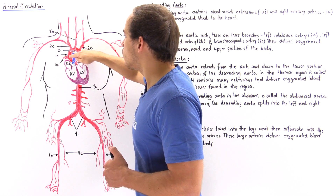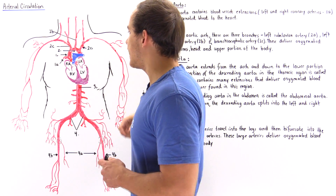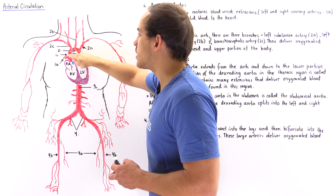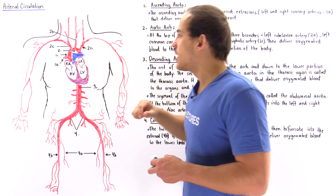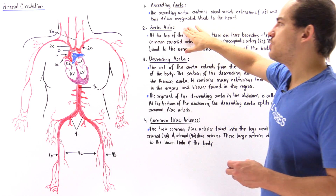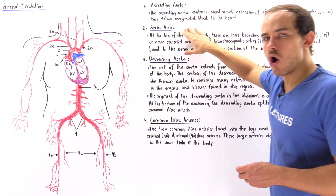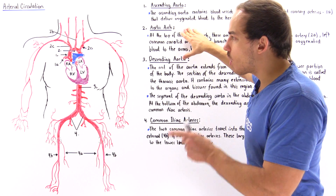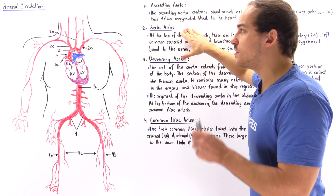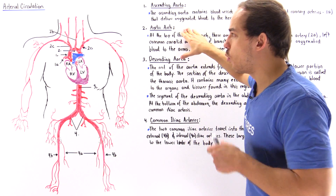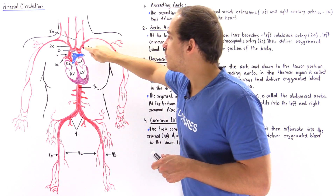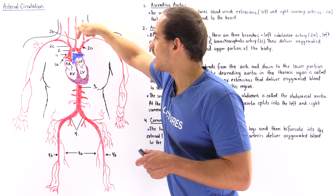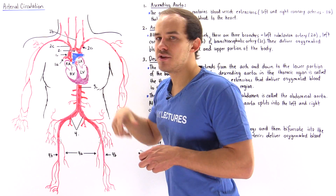If we follow the ascending aorta, we eventually get to this arch, commonly known as our aortic arch. The aortic arch contains three important branching points: one on the left side, one on the right side, and one in the middle.